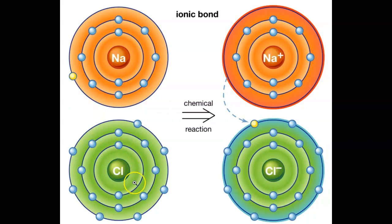Now let's look at chlorine. Chlorine has seven electrons in its outer shell, so it wants to gain an electron.